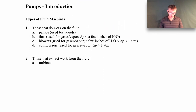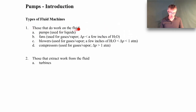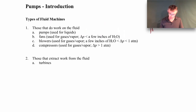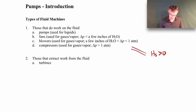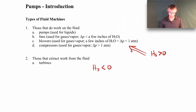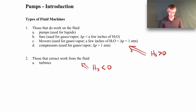The types of fluid machines we deal with fall into two classes. First, machines that do work on the fluid — pumps, fans, blowers, and compressors — all add energy into the flow. When you think about the extended Bernoulli equation, the shaft head term is positive for these cases. The other class extracts work from the fluid, like turbines, where the shaft head term is negative because we're pulling energy out of the flow.